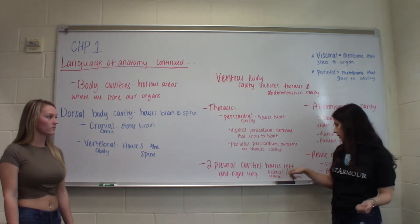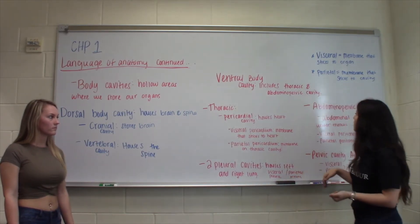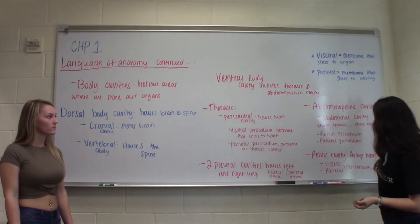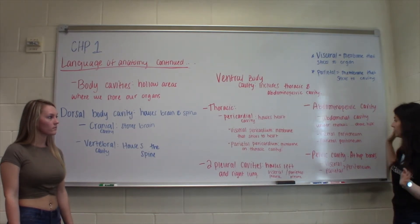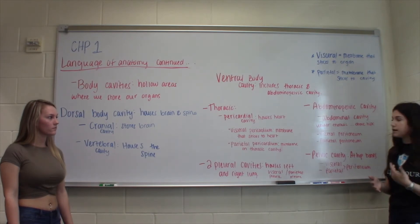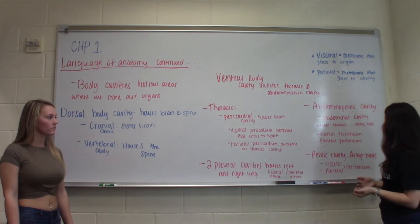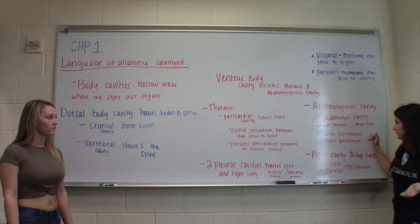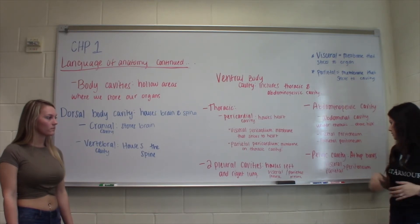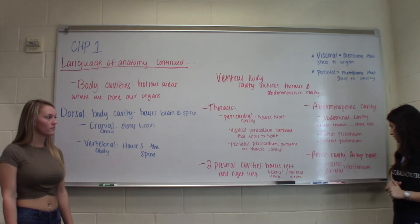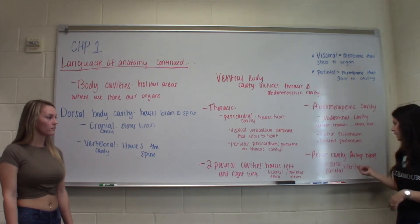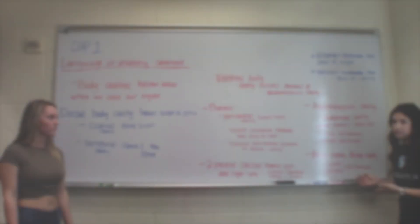The abdominopelvic cavity is under the thoracic cavity and above your hips. It has the visceral peritoneum and parietal peritoneum. The pelvic cavity is at your hip bones and also has visceral and parietal peritoneum.